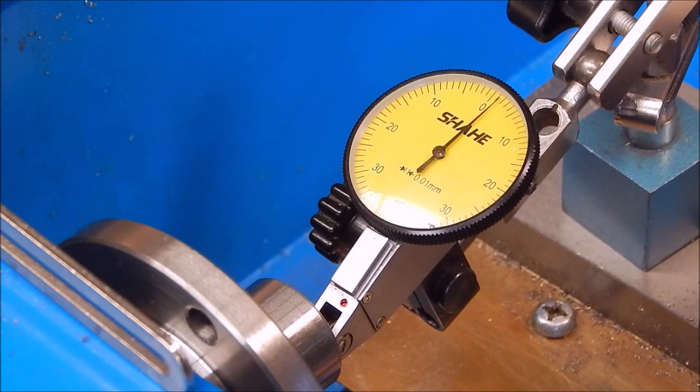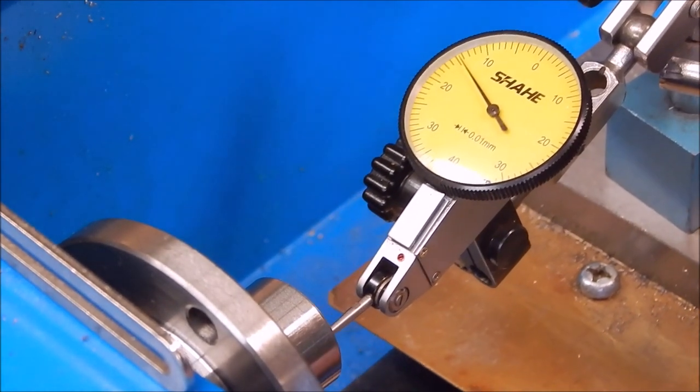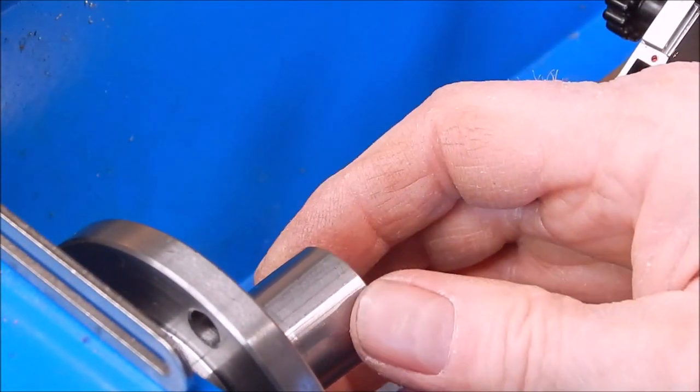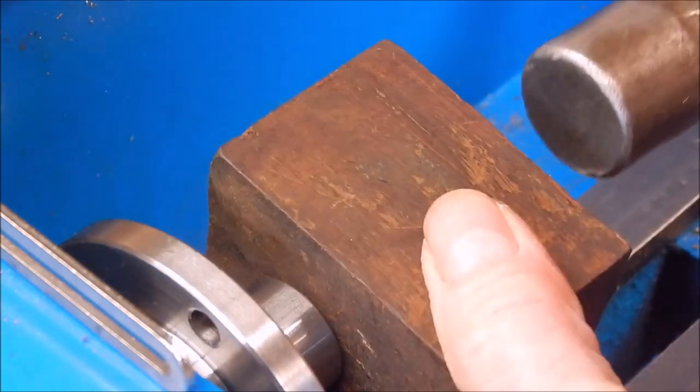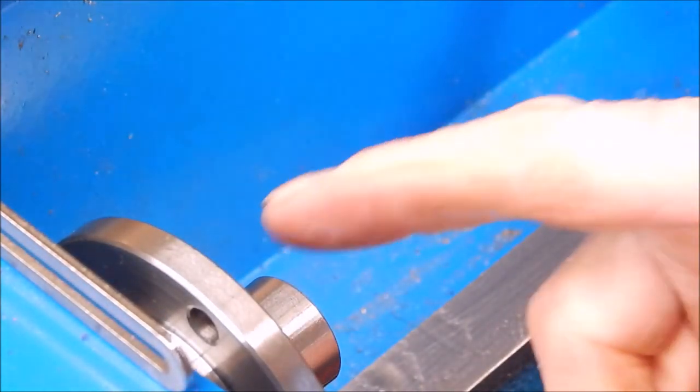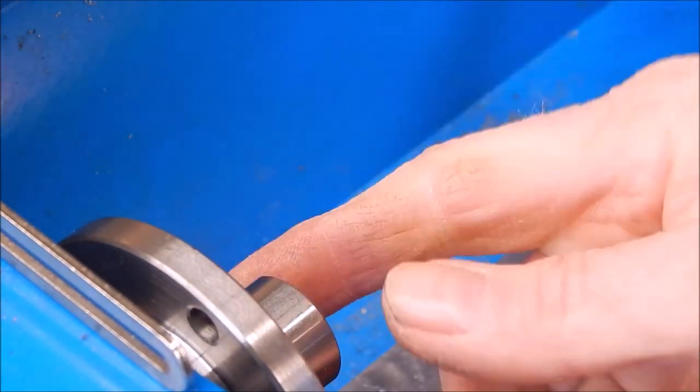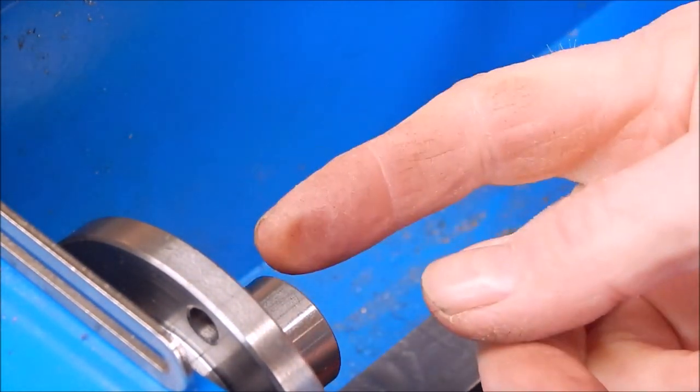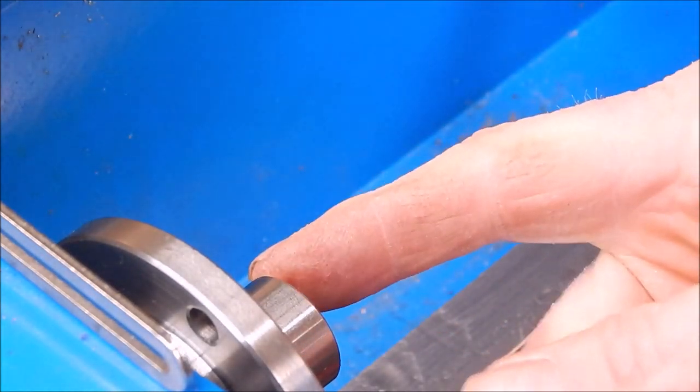Okay now I'll knock it out and I'll turn it around 180 degrees and we'll see what happens. Now when you tap these you don't have to belt the bejesus out of them. Like all these Morse tapers, just tap them in lightly and they'll grip. It's not necessary to pound the hell out of them.